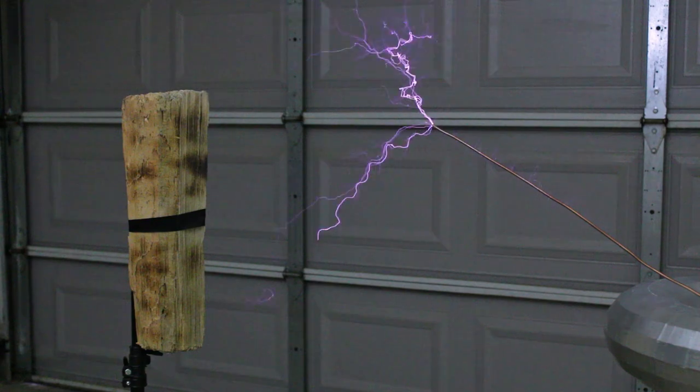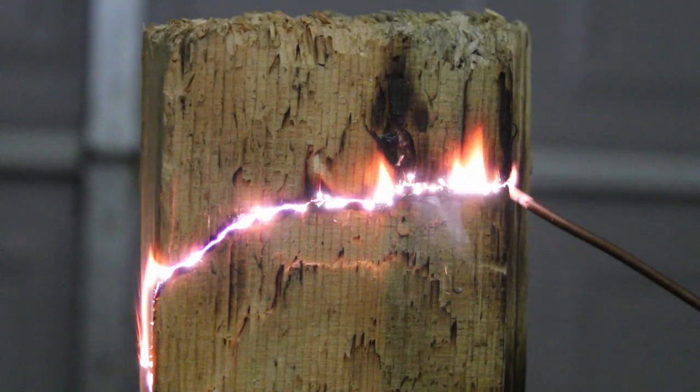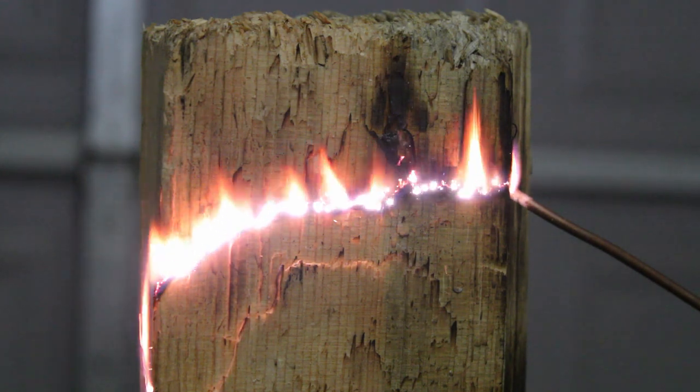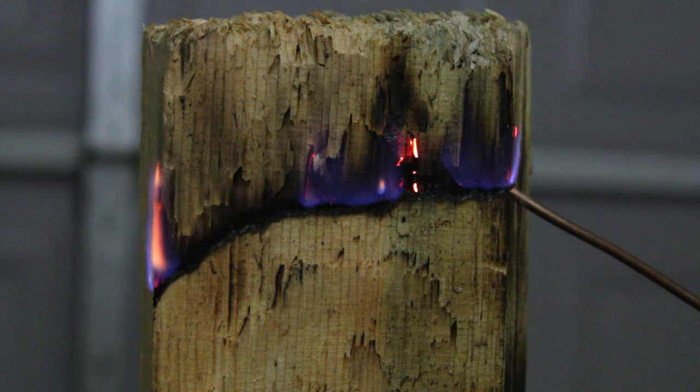Huh, it seems to have a hard time with how much arc movement there is. Let's try again from point blank range. Nice. Once that carbonized channel was established, the wood lit up with no trouble at all. This does beg the obvious question though. Would the arc do the same thing to human flesh?